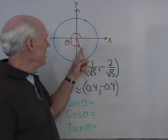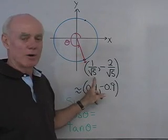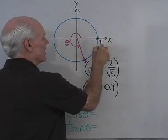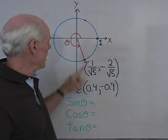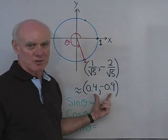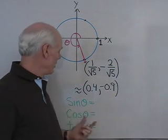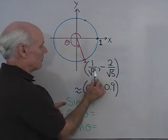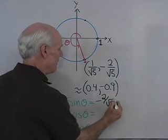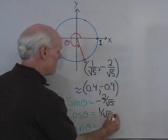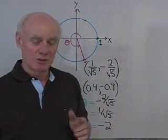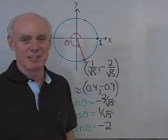Suppose angle θ intersects the unit circle at the point (1/√5, −2/√5). The ordered pairs on the unit circle go cosine first, then sine. So the sine of this angle is −2/√5, cosine is 1/√5, and tangent is sine over cosine, which is −2. When you know where an angle intersects the unit circle and have the coordinates of that point, finding sine, cosine, and tangent is very easy.